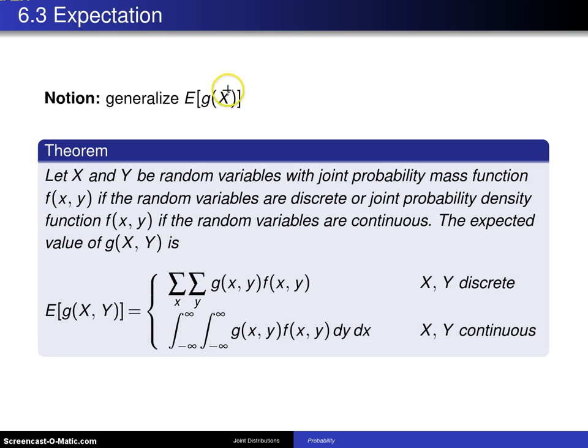To review rather quickly in one dimension for a univariate random variable, we want the expected value of g of x and one rather popular expected value is when g of x is just x and the expected value of x gets a special symbol and that is mu.